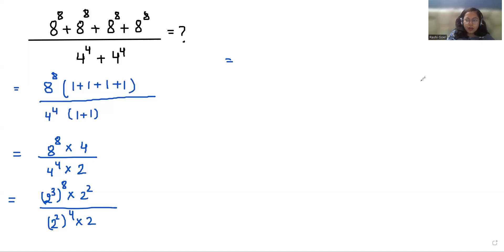Now according to exponent rule x power m power n we can write it as x power m n. So here it becomes 2 power 24 times 2 power 2. Similarly, again I am going to use this rule and we can write it as 2 power 8 times 2.